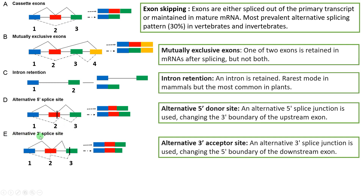The fifth type is alternative 3' splice site. Here, in the downstream exon, an alternative 3' splice junction is used. The boundary of the downstream exon moves, changing the 5' boundary of that downstream exon. This similarly results in an alternatively spliced mRNA with a different exon boundary compared to the canonical splice form.